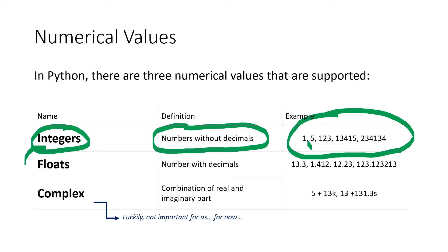The big difference between floats and integers is always the decimal point. If you have a number with a decimal point, it's always a float. For example, 13.3, 1.412, or even much larger numbers. As long as they have a decimal point, it is a float.